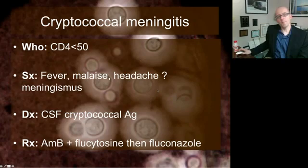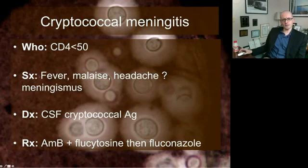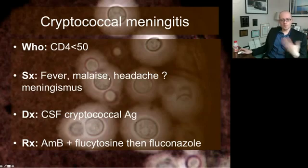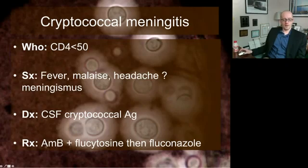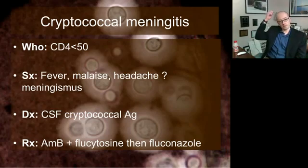Cryptococcal meningitis mostly affects only very immunocompromised people, though sometimes at higher CD4 counts. They get an indolent onset of fever, malaise, headache, and sometimes meningismus, but it's not nearly as acute as bacterial meningitis. Lumbar puncture reveals abnormalities, and the characteristic finding that makes the diagnosis is cryptococcal antigen from the CSF. Treatment is amphotericin plus flucytosine, followed by fluconazole, and sometimes people need intracranial pressure reduction through a drain.